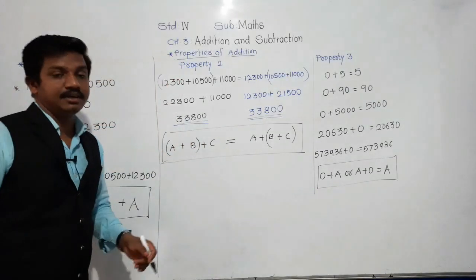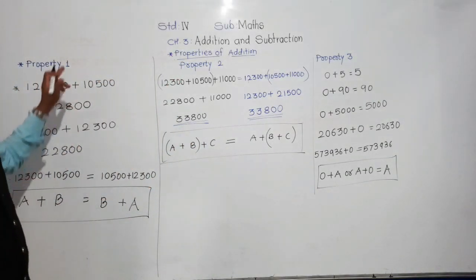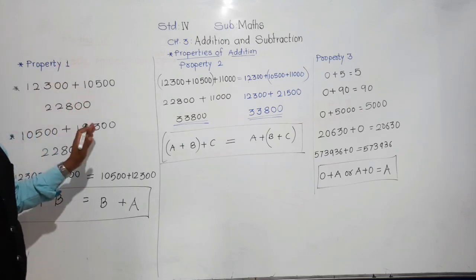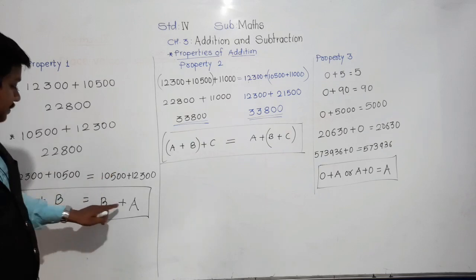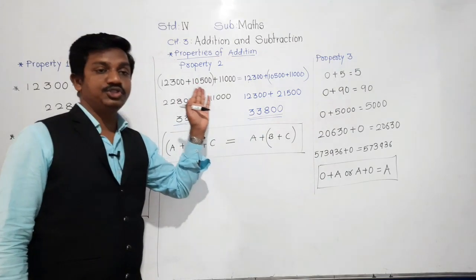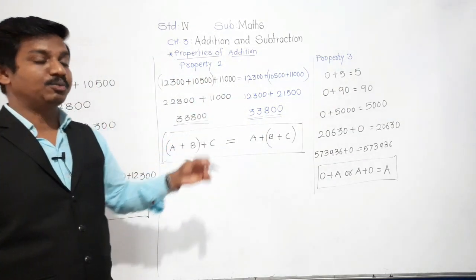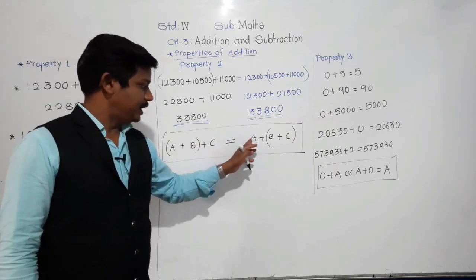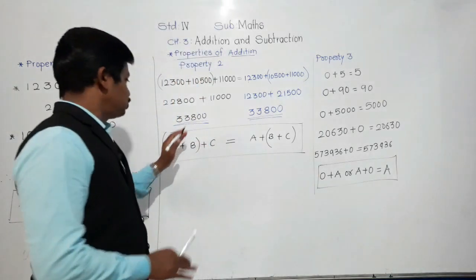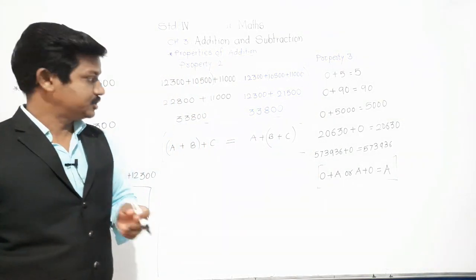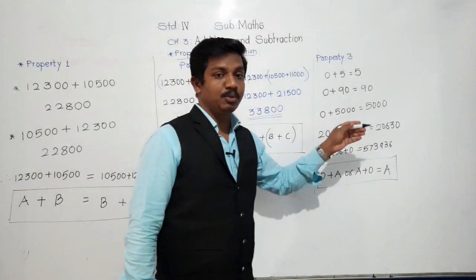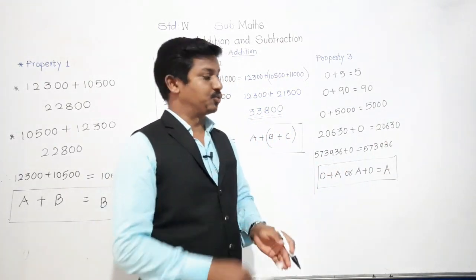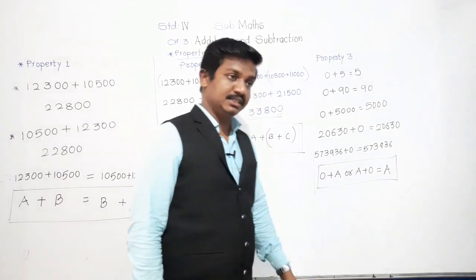To summarize all three properties: First, the order property — if we change the order of two numbers, their addition remains the same: A plus B equals B plus A. Second, the associative or grouping property — (A plus B) plus C equals A plus (B plus C). Third, the property of zero — adding zero to any number gives that number itself.